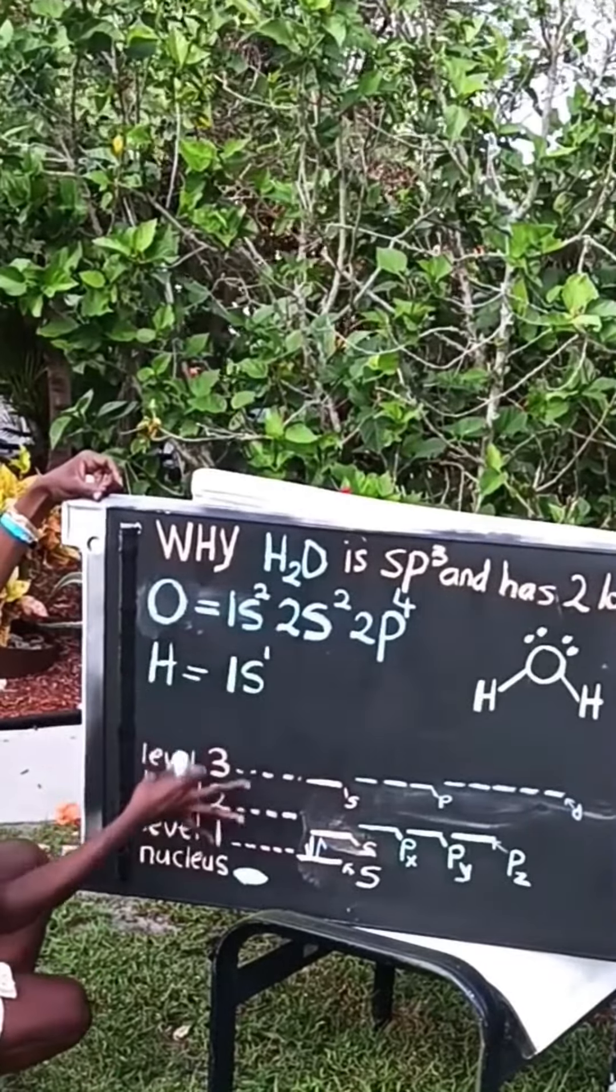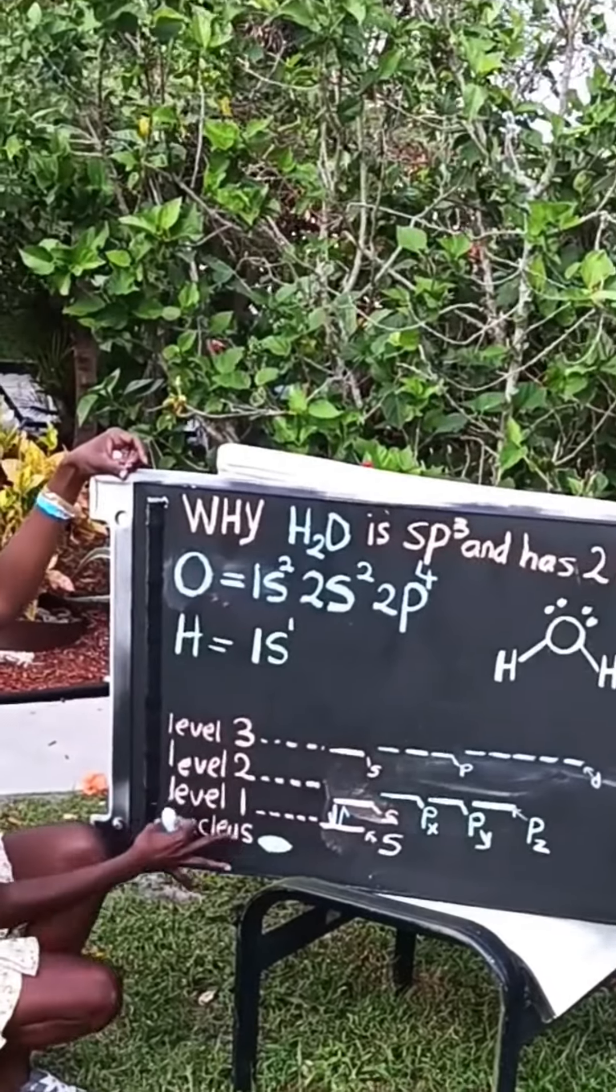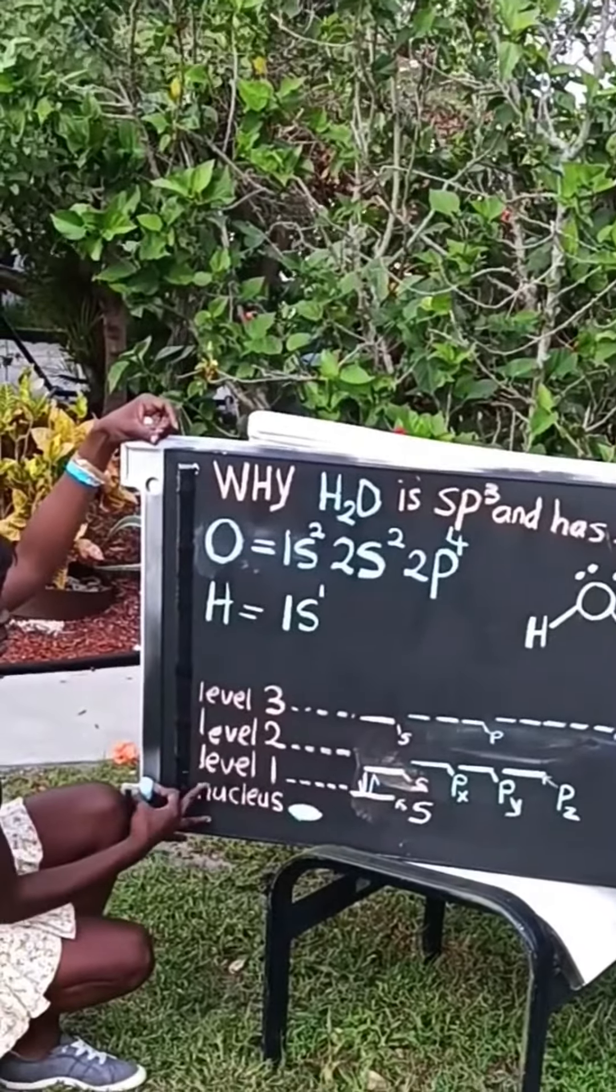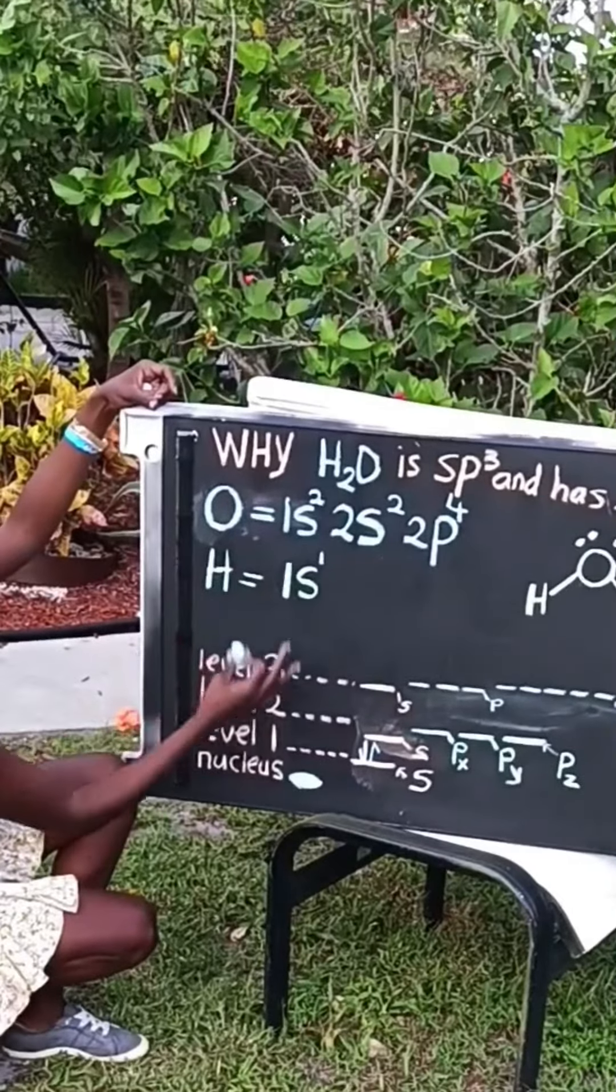Alright, so we're going to take this and put it in our energy diagram down here. We have our nucleus, we have our levels, they go on up to level 4, 5, whatever.